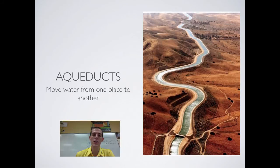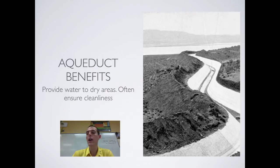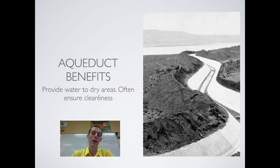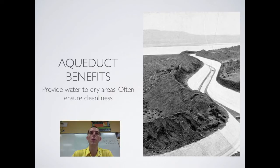Aqueducts come in many shapes and sizes but all serve the same purpose. The main benefit is to provide water to dry areas — places in the Middle East and the American Southwest that are desert and historically couldn't support farming or large populations. Using an aqueduct, you can take water from where it's abundant and move it to where it isn't. The cities of Los Angeles and New York City both rely on aqueducts to move water from over 200 miles away. Aqueducts also help ensure cleanliness by taking water from pure sources like mountain streams or lakes, reducing the need for purification.